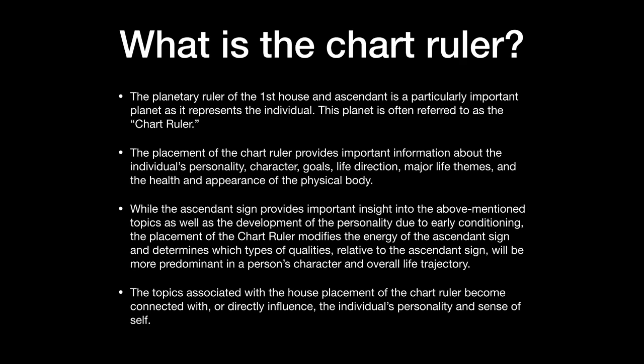I'm going to pull up a short presentation — an excerpt from my house rulerships course. If you want the full course and to understand all the rulerships in your chart, you can find the link in the description below. So: what is the chart ruler? The planetary ruler of the first house and ascendant is a particularly important planet — it essentially represents you as a person. In traditional Hellenistic astrology, the first house is always you, while the other houses represent topics, people, and things outside of you.